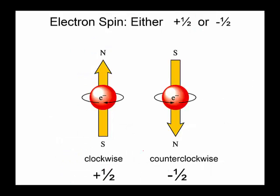Here's a picture of the spin number. It's either spinning clockwise, which would be assigned plus one half, or the electron might be spinning counterclockwise. What this does is it creates a little bit of a magnet. Normally the electrons would be repelling, but since they have clockwise and counterclockwise opposing spins, it creates a little magnet — actually a little bit of an attractive force if they have to occupy the same orbital.